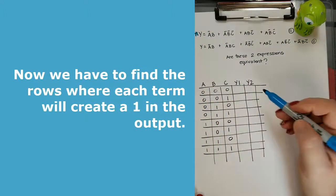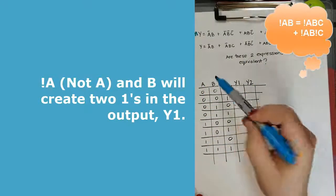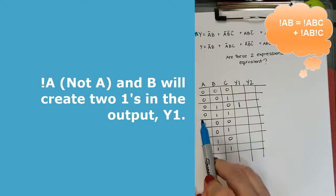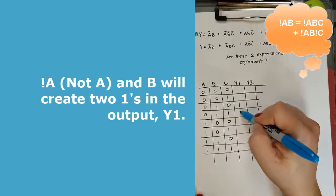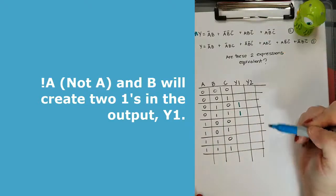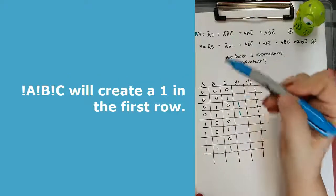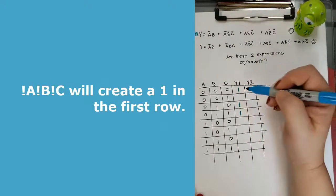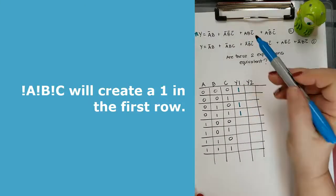So I look at the term not A, B, and I enter the two ones in the truth table for that. So you can see that the next term, not A, not B, not C, only puts one Y in the truth table.